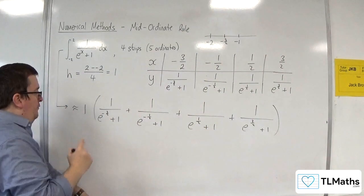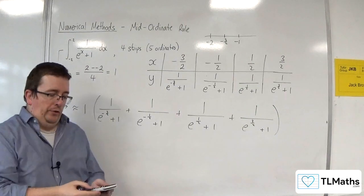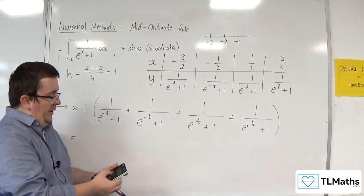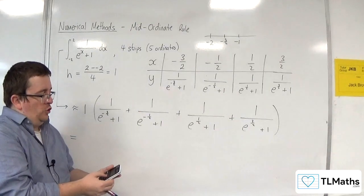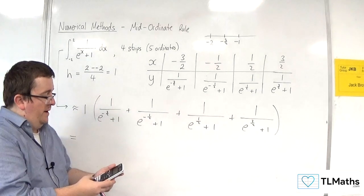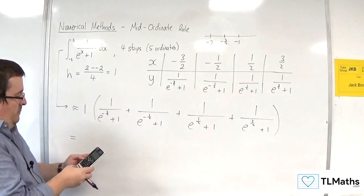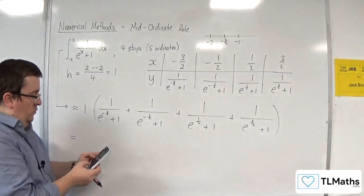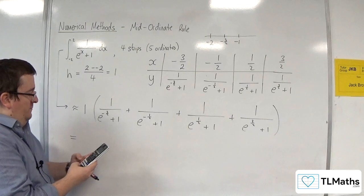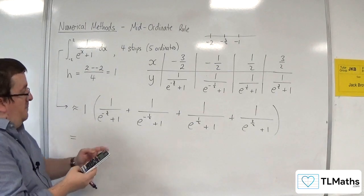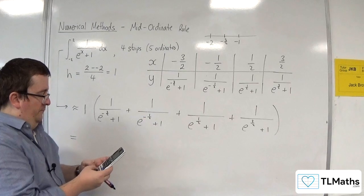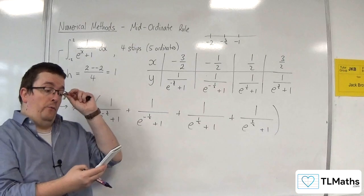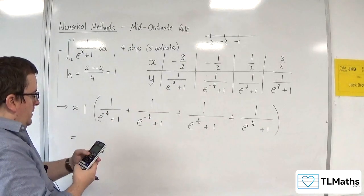Now don't forget, you could use the table function on your calculator. So I'm just using the Casio ClassWiz. Your other calculators should have this feature as well. So menu 9 to get to the table. And then I'm going to type in 1 over e to the x plus 1. I don't need a g of x. I'm going to start at minus 3 halves. And I'm going to end at 3 halves. And I'm going to go up in steps length of 1.